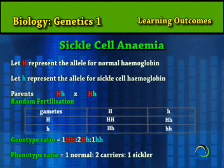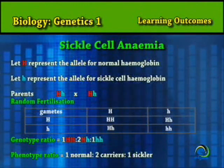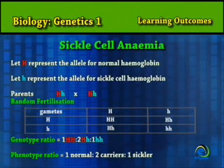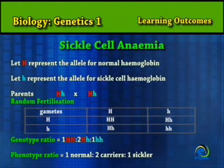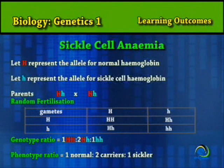Individuals who are heterozygous for the sickle cell allele are generally indistinguishable from normal persons. If two persons with sickle cell trait have children, there is a 1 in 4 chance that their child may have the disorder.